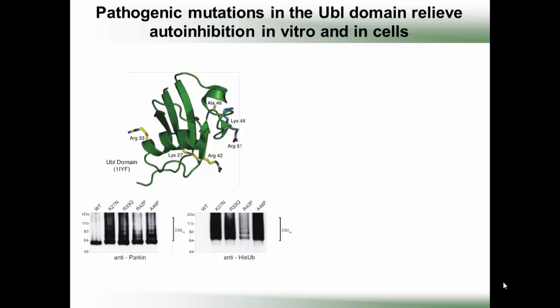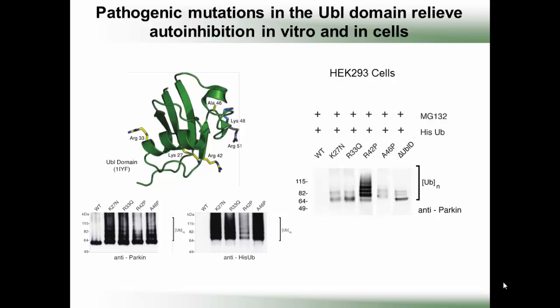Patient mutations in different domains have different effects on Parkin activity. For example, in the ubiquitin-like domain there are single-point mutations that are sufficient to render Parkin active for auto-ubiquitination, both in vitro and in a cellular context. Very recent work this year has shown that phosphorylation of ubiquitin by PINK1, another Parkinson's disease protein, leads to the activation of Parkin.